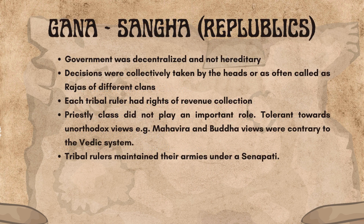Now let us look at the Gana Sangha. Government was decentralized and not hereditary. Decisions were collectively taken by the heads, or as often called, the rajas of different clans. Each tribal ruler had rights of revenue collection. The priestly class did not play an important role. They were tolerant towards unorthodox views — for example, Mahavira and Buddha, whose views were contrary to the Vedic system. Tribal rulers maintained their armies under a senapati.